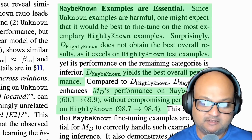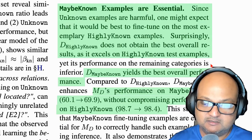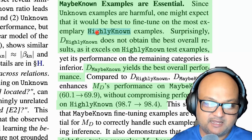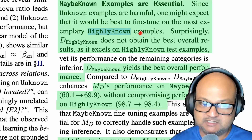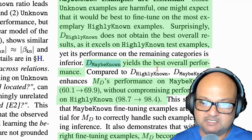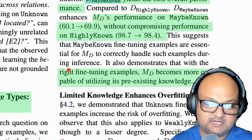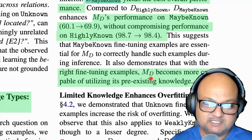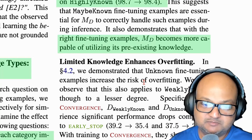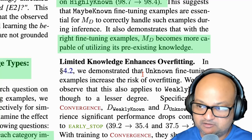That begs the question: if having a high fraction of unknown samples in the fine-tuning dataset is harmful, what if you adjust that mix to have more of the maybe known or highly known data? What they found was that just adding a lot of highly known examples doesn't provide the best accuracy. In fact, having a lot of maybe known examples in the dataset gives the best overall performance. This leads to one of the central ideas of this paper: fine-tuning is not so great at teaching an LLM new knowledge, but what it does is teach an LLM to better utilize its pre-existing, pre-trained knowledge.